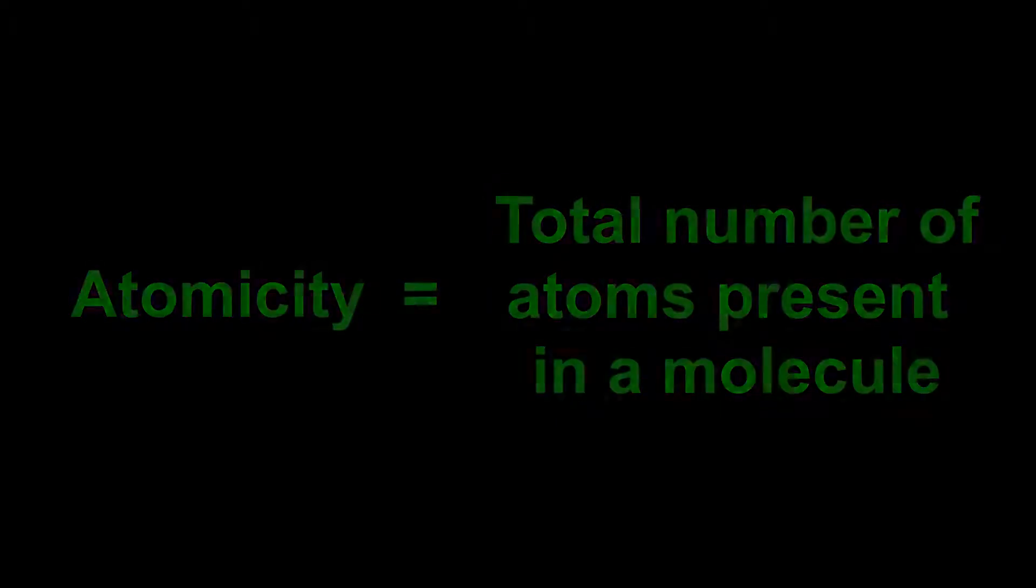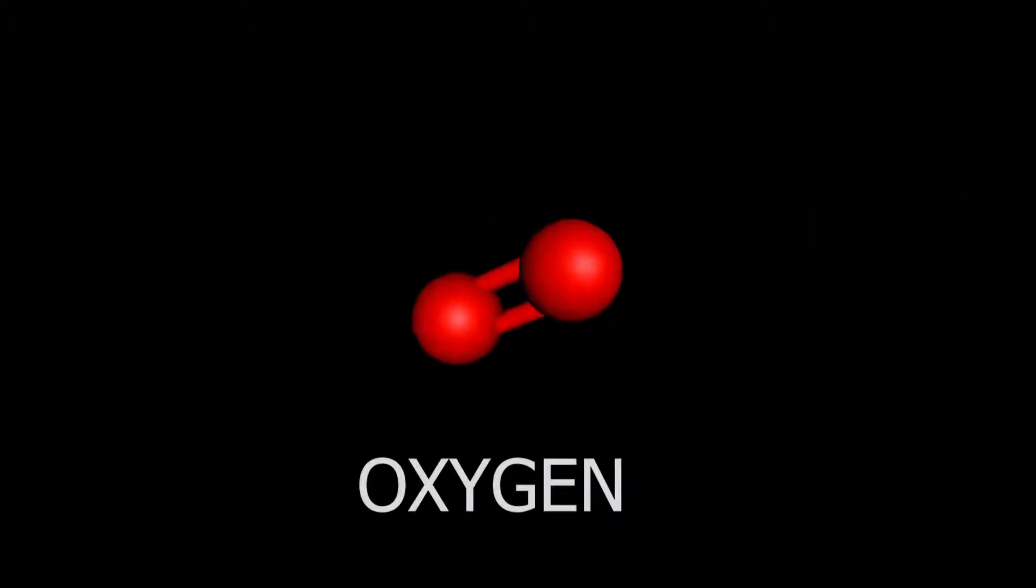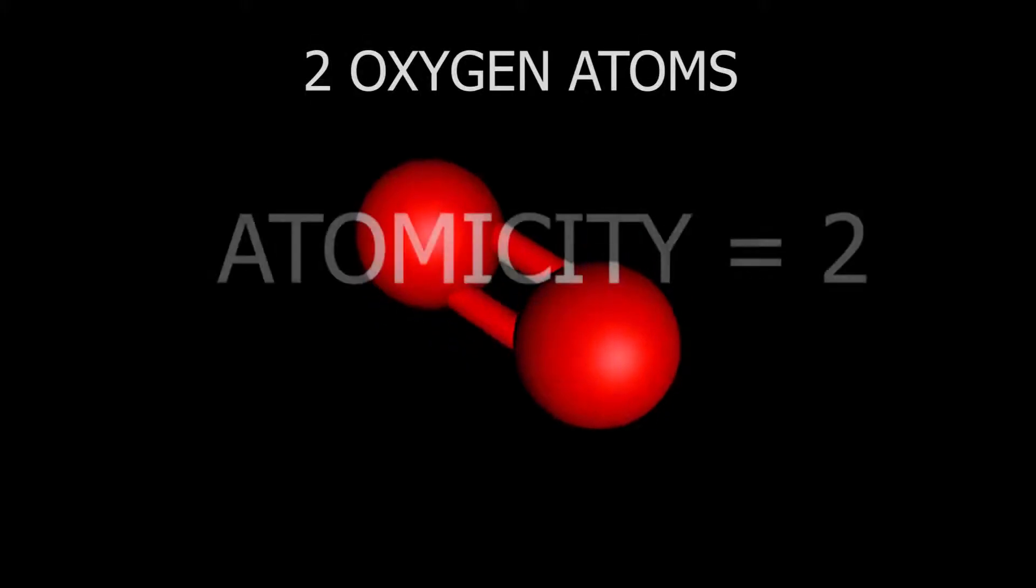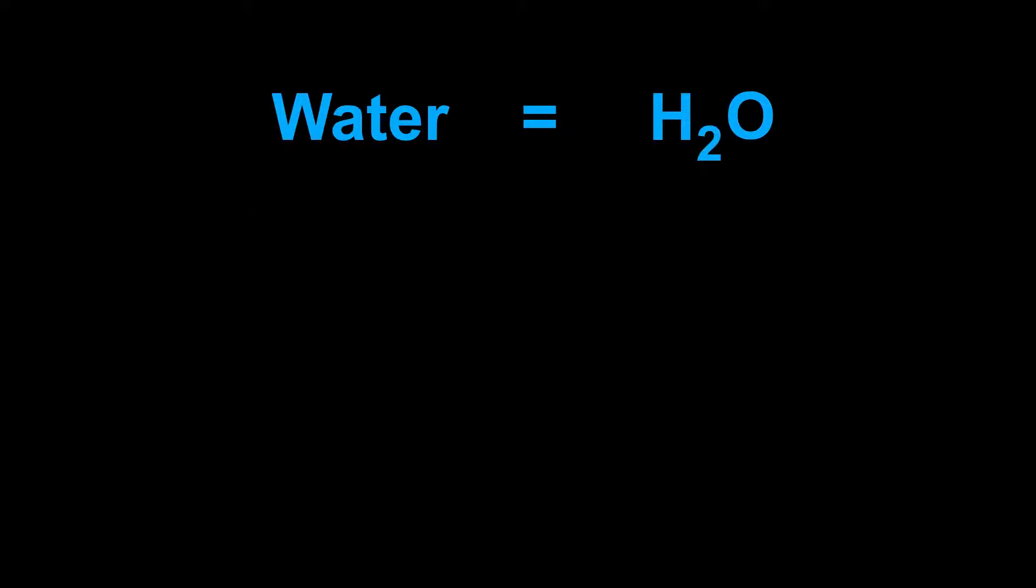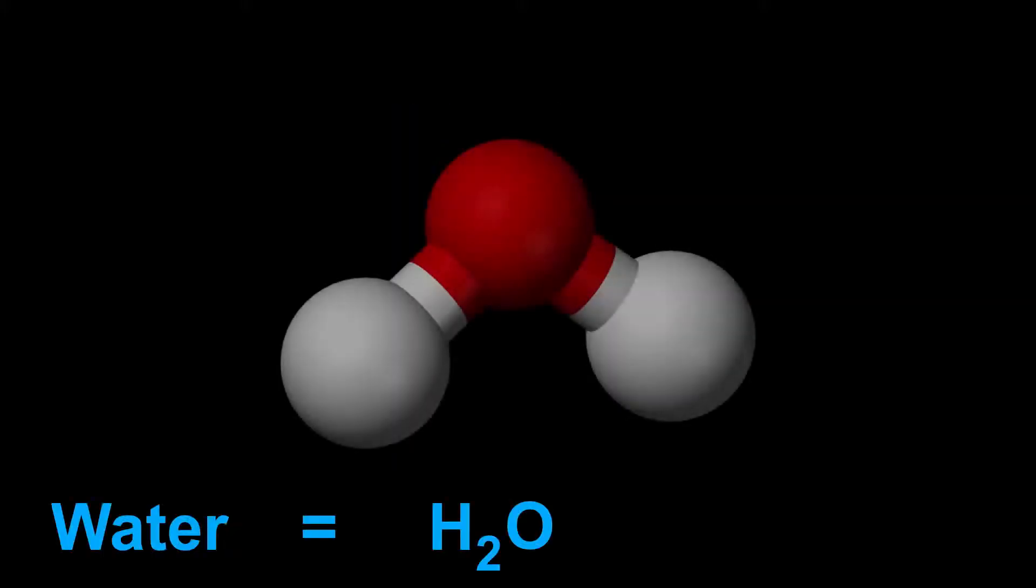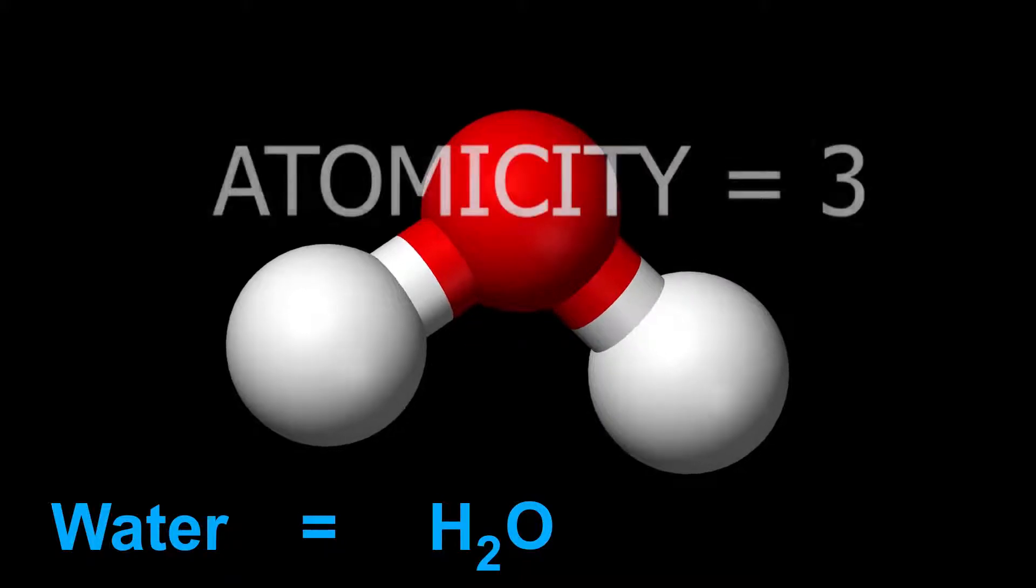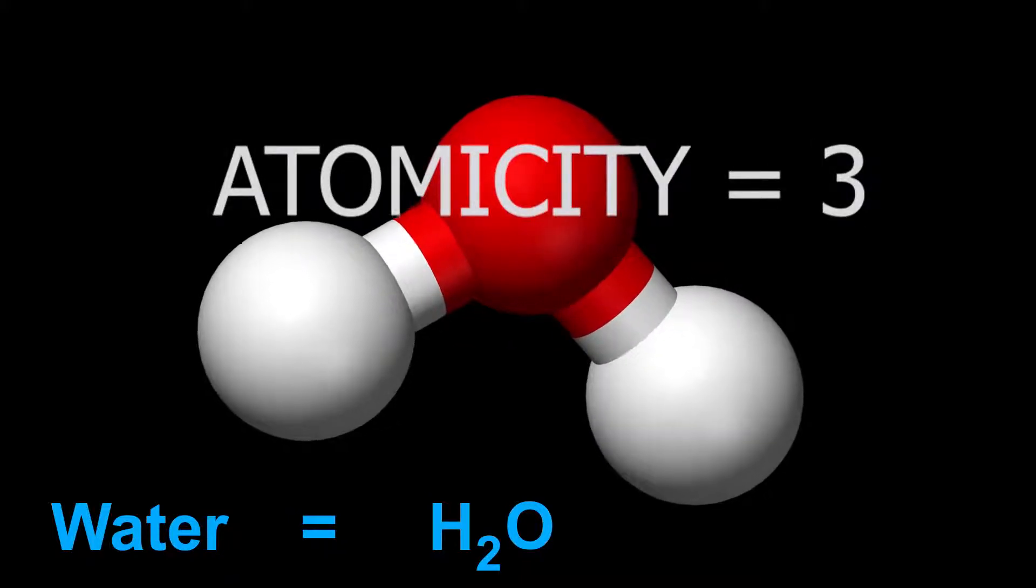For example, oxygen gas is a molecule of elements. It has two oxygen atoms in it and thus its atomicity is 2. Chemical formula of water is H2O. There are two hydrogen atoms and one oxygen atom and thus atomicity of water molecule is 3.